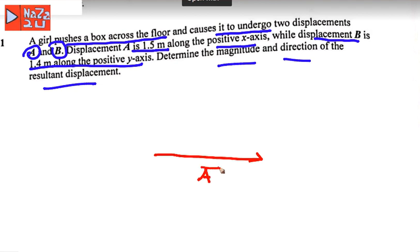And you have vector B, 1.4 along the positive y-axis. For vector B, you have this is 1.4, this is vector B, magnitude 1.4 meters, and vector A is 1.5 meters.